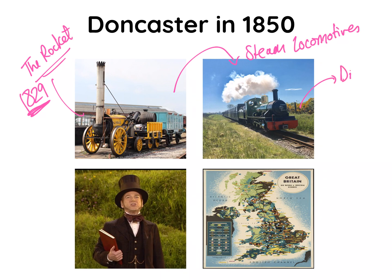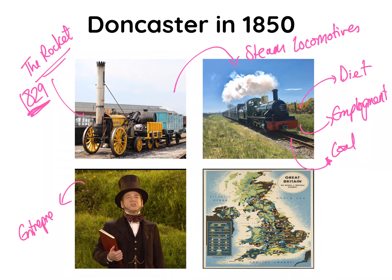The steam locomotive transformed life in England. It even changed people's diet because they were able to get food from different parts of the country. It transformed employment and led to skilled workers. It helped to improve the coal industry because steam power relied on coal. This was the period of the entrepreneur — the businessman — and this is key to understanding why Doncaster was chosen. Britain was transforming from an agricultural-based society into an industrial one.